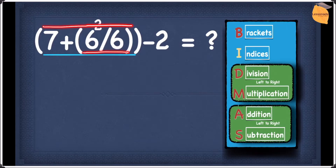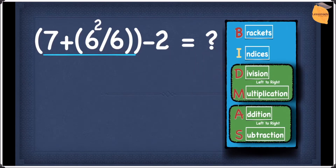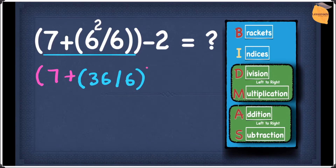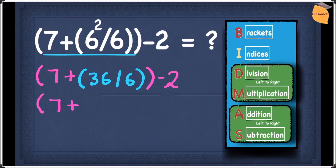We're going to work out the inner bracket first. In the inner bracket we have indices and division. Since indices is higher, we do the indices first and then divide. So 6 squared gives 36, and then 36 divided by 6 gives an answer of 6. So rewriting the question: outer bracket 7 plus 6, close bracket, minus 2.